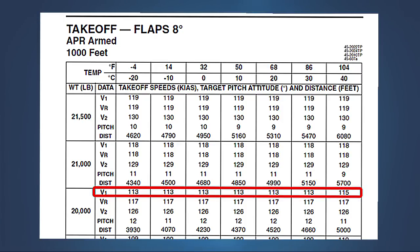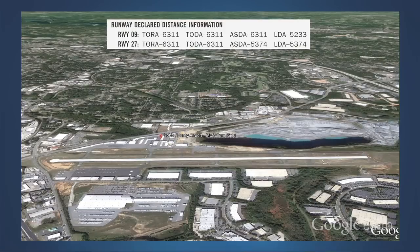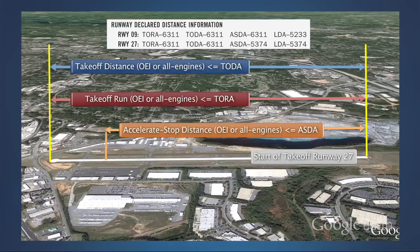The minimum field length required for takeoff is usually based on the balanced field concept, which is a condition where the selected takeoff V1 speed results in accelerate stop distance being equal to the one engine inoperative takeoff distance. A small number of business jets are furnished with unbalanced field takeoff data that allows for the independent calculation of takeoff distance, takeoff run, and accelerate stop distance. These airplanes can realize a takeoff weight advantage over an airplane limited to balanced field takeoff data by calculating an unbalanced V1 that may be higher or lower than the balanced value, depending on the declared distances available.